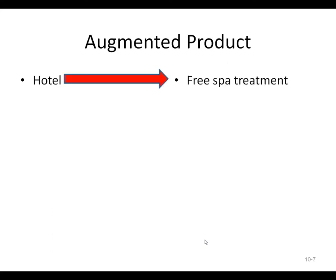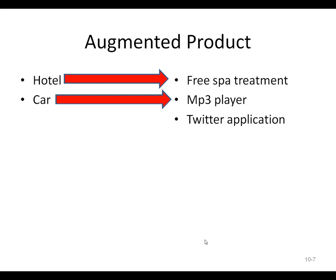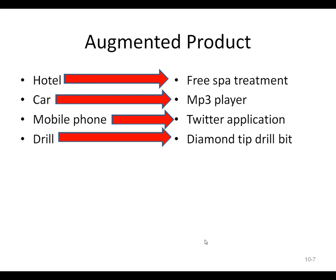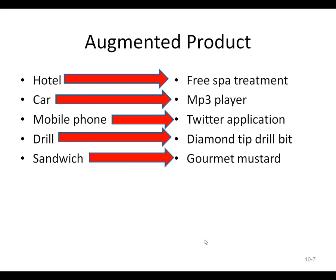The augmented product — these are just extras that can come along with the product. For a hotel, maybe it's a spa treatment or a gym. For a car, maybe it's an MP3 player or Bluetooth. For a mobile phone, we might expect a Twitter application or Facebook — things above and beyond just being able to call someone. A drill can be augmented with a diamond-tip drill bit that allows you to drill through much harder surfaces. A sandwich can be augmented through gourmet mustard instead of regular yellow mustard — a way to set it apart from others.